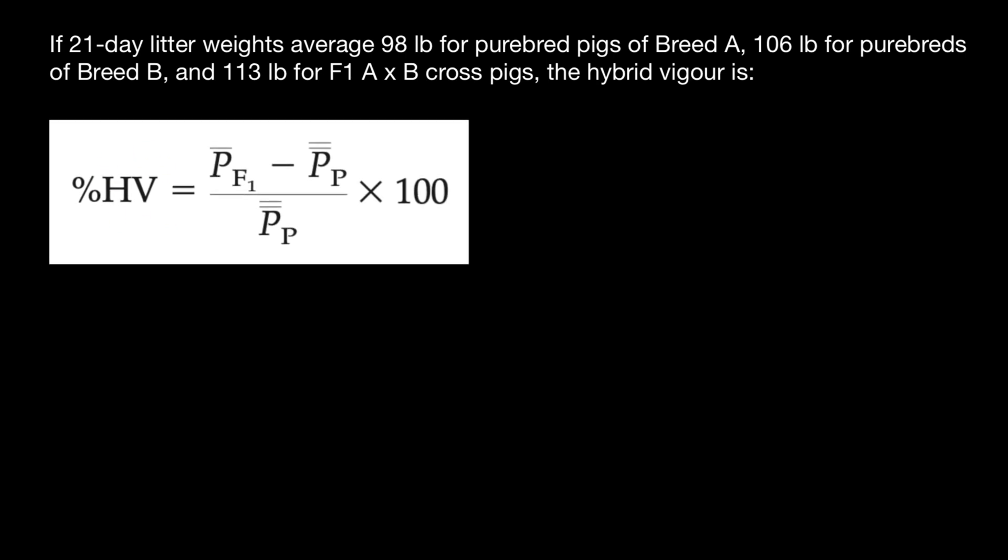So now you see hybrid vigor, we calculate as percent. And what we see in this formula, first of all, we have average performance of the parents. So P stands for the performance and this P stands for the parent or parental generation.